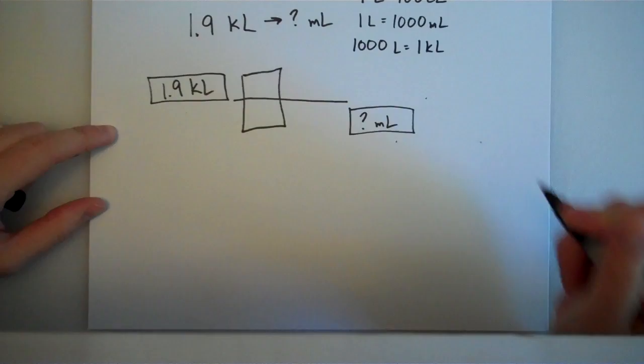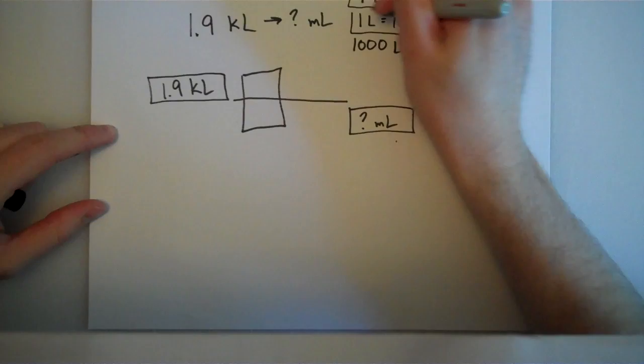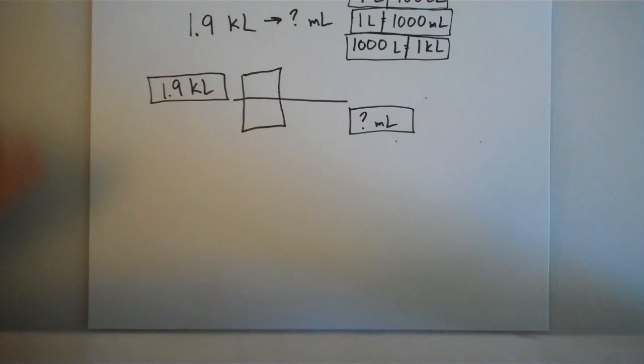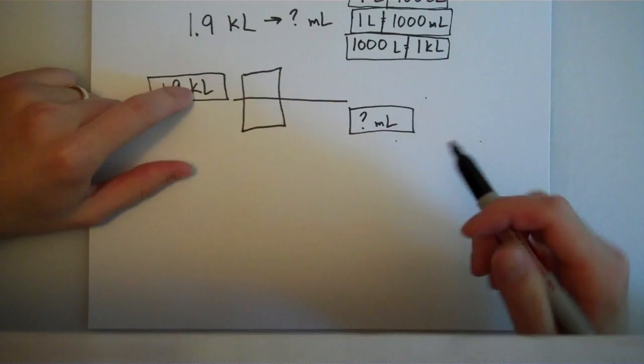Now, those right there are dominoes, conversion factors. Wherever the equal sign is, that's where the line goes. Those are the three dominoes that I keep memorized because we use them so often. I have kiloliters up here in the top left-hand corner, so I'm going to go ahead and use this domino right here because it has kiloliters.